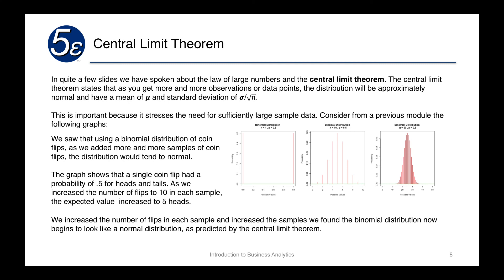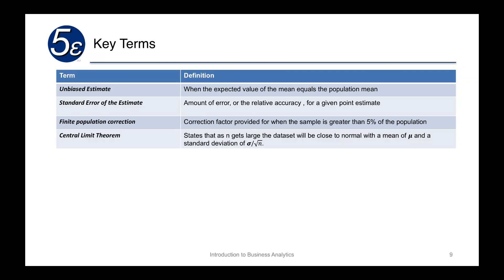In quite a few previous slides, we've spoken about the law of large numbers, and something called the central limit theorem. The central limit theorem states that as you get more and more observations or data points, the distribution will be approximately normal, and it will have a mean of mu and a standard deviation of sigma divided by the square root of N. This is important because it stresses the need for sufficiently large sample data. From a previous module, we had the following graphs when we were talking about the binomial distribution. We could see that as we added more flips and we had more trials, we could see that in the middle we had 10 trials of 50 flips, and the second one was 50 trials of 50 flips. And we could see the normal curve starting to appear. And so, as we increase the number of flips in each sample and increase the number of samples, we could find the binomial distribution now begins to look normal as predicted by the central limit theorem.